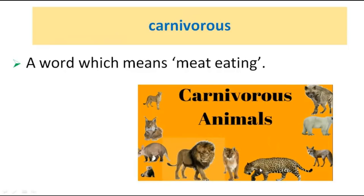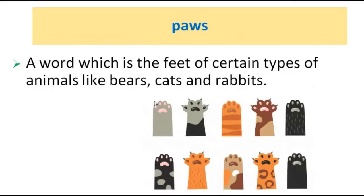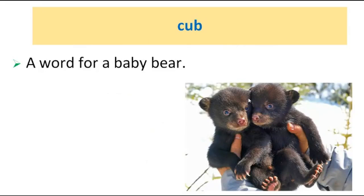Carnivore: a word which means meat-eating. Seals and walruses: they are types of marine animals. Paws: the feet of certain types of animals like bears, cats, and rabbits. Webbed: an adjective to describe skin between an animal's toes. Cub: a word for a baby bear.